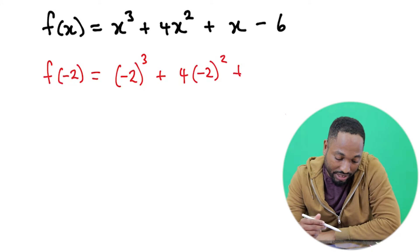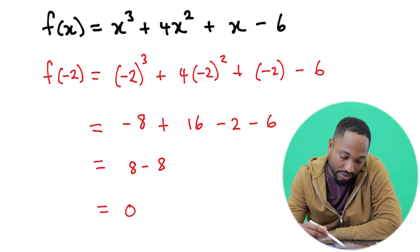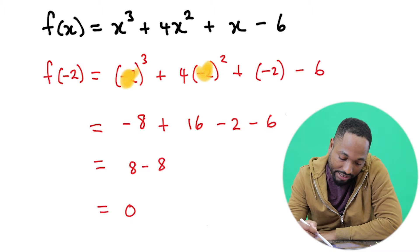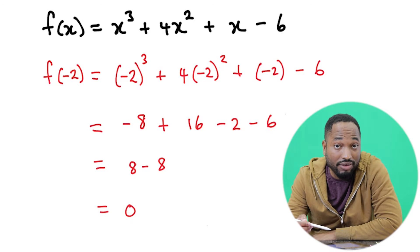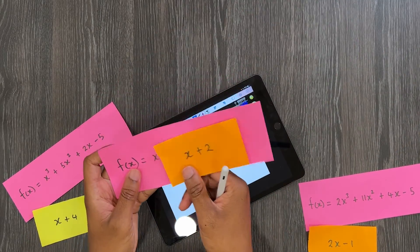So let's see what happens here. Take your time, work it out yourself. Notice how I substitute negative 2 anywhere I'm seeing x. And it does give me zero, so it means that x + 2 is an actual factor of this polynomial.